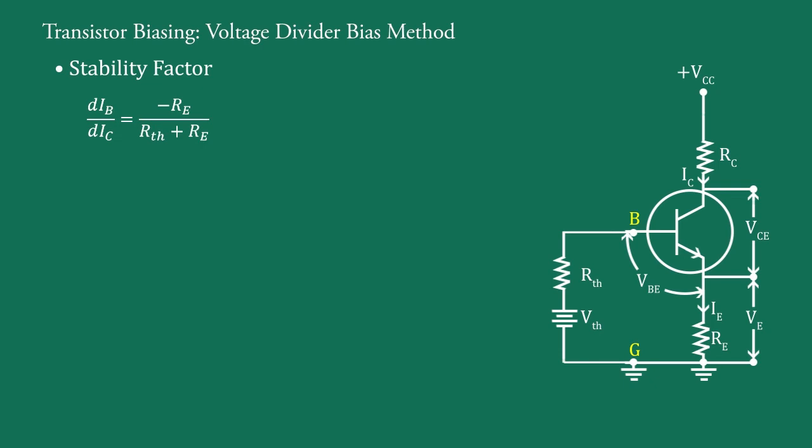Now, stability factor is defined as S equal to beta plus 1 upon 1 minus beta into dIB upon dIC. Substituting the value of dIB upon dIC from this equation, we get S equal to beta plus 1 upon 1 plus beta RE upon RTH plus RE.